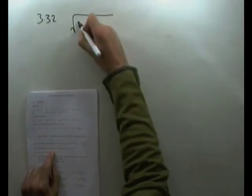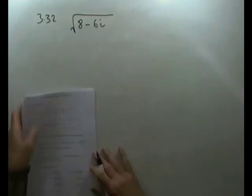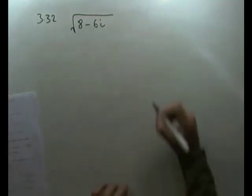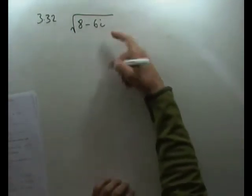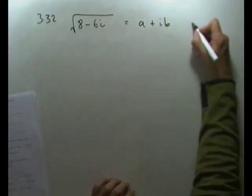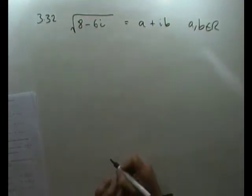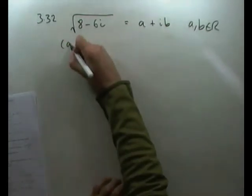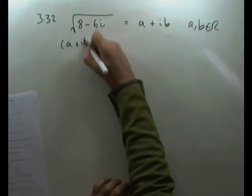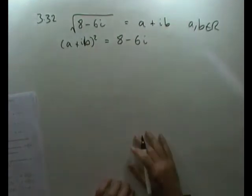Question 3.32: Find the square root of 8 minus 6i without changing it into polar form. The technique is to let that equal a plus ib, where a and b are real numbers, which means that (a + ib)² has to equal 8 minus 6i.